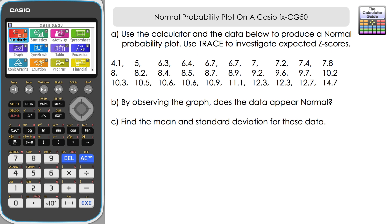And then we have the list of data there. Part B, by observing the graph, we're going to assess whether the data appears normal. And then part C, we're going to find the mean and standard deviation for these data again from the calculator.